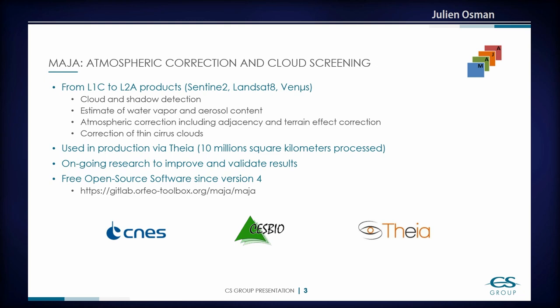The first project I want to present is MAJA. MAJA is a software for atmospheric correction. It will take a time series of images of Level 1 products. It can work with Sentinel-2, Landsat-8, and Venus sensors. And it will generate Level 2 products of that time series. It will detect the clouds and the shadows of the clouds. It will also estimate the water vapor and the quantity of aerosol in the atmosphere, and it will proceed to the atmospheric correction. It is also able to remove the thin cirrus clouds in the images. It's already in use in production via the THEIA platform.